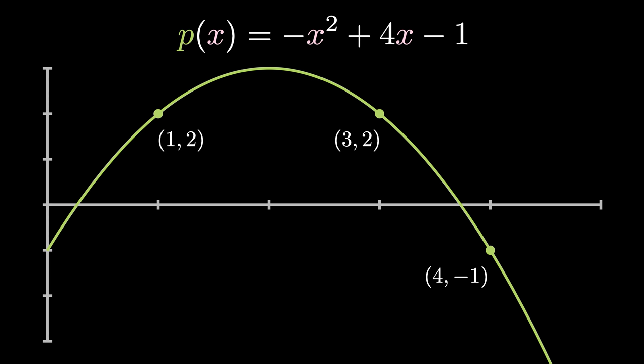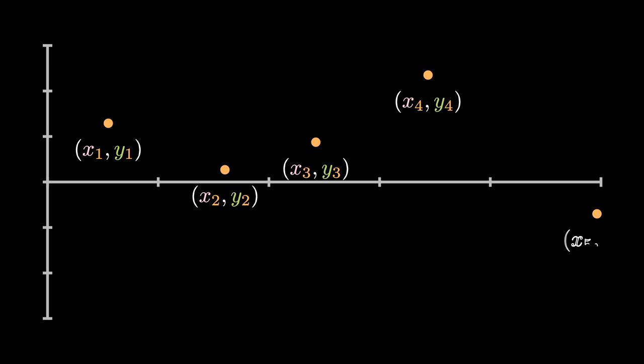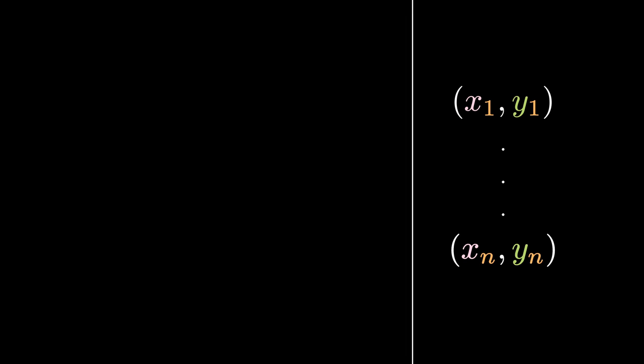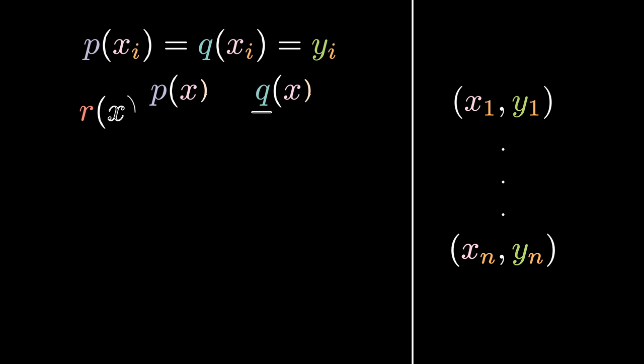A super important fact about this polynomial is that it is unique. That is, there is one and only one polynomial of degree n minus one that goes through these n points. We can prove this using contradiction. Consider n distinct points labeled (x_i, y_i) for i going from one to n. Let's assume that the polynomial of degree n minus one satisfying these points isn't unique, and that there are two distinct polynomials p(x) and q(x) of degree n minus one such that p(x_i) is equal to q(x_i) is equal to y_i. Let's consider a polynomial r(x) is equal to p(x) minus q(x).